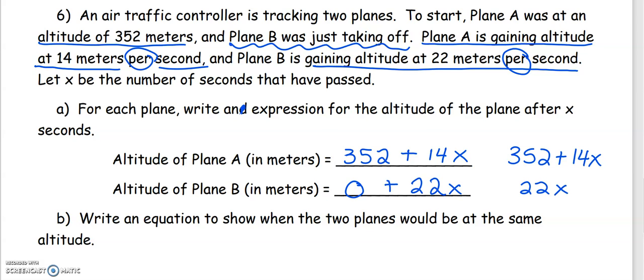Part b: write an equation to show when the two planes would be at the same altitude. I'm going to take my expression from plane A and set it equal to my expression from plane B. And again, this doesn't ask me to solve, it just asks me to write that equation where the two planes are going to be up in the air at the same altitude.